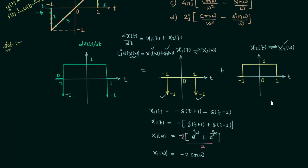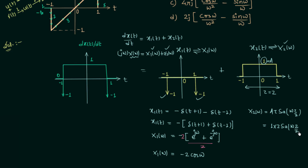For x2(t), which is a rectangular function, the Fourier transform is a·τ·sinc(ωτ/2), where amplitude a = 1 and duration τ = 2. So X2(ω) = 1 × 2 × sinc(ω × 2/2) = 2 sinc(ω), which can also be written as 2 sin(ω)/ω.